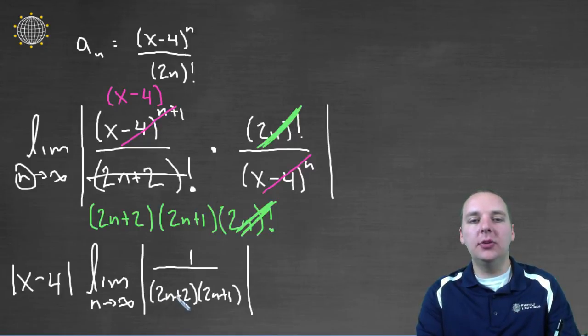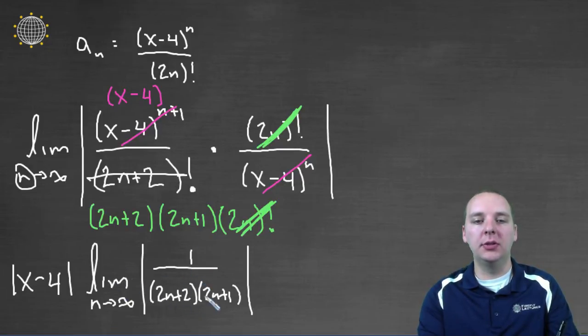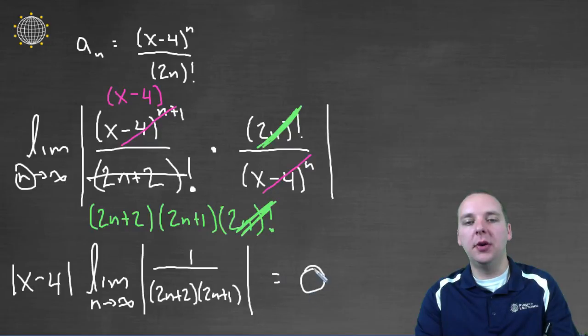And these cannot come outside the limit because they have n's in there. So as n goes to infinity, right here with this limit, where does this expression go, one over two n plus two times two n plus one? It goes to zero. And what's zero times anything? I think this would be zero.